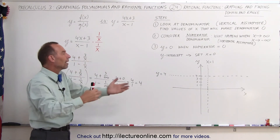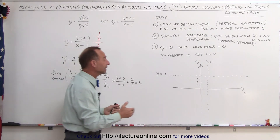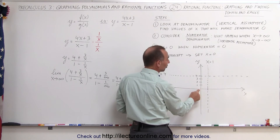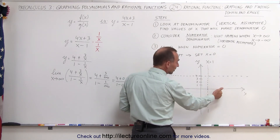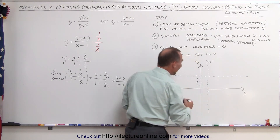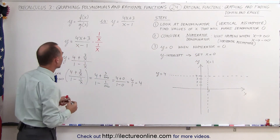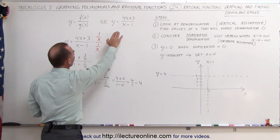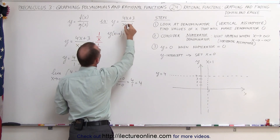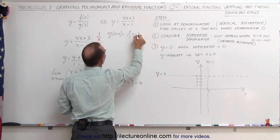Now we try some test points on either side of the vertical asymptote to determine where the graph lies. Let's plug in x equals 0. That gives us 3 over negative 1, which is negative 3. So when x equals 0, y equals negative 3. We can plot that point at (0, -3).